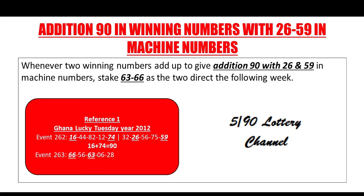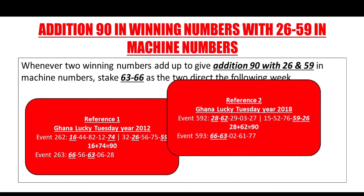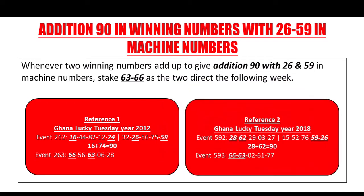Let's move on to another example — the same Tuesday game, year 2018, Event 592. You can see 28 and 62 gave Addition 90, and in machine numbers 59 and 26 also dropped. The following week, 66 and 63 dropped again.